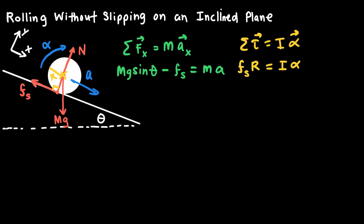I now have an equation for translational motion and one for rotational motion. I need one more equation to eliminate alpha. The linear acceleration A is related to the angular acceleration through the radius: A equals R times alpha, so alpha equals A divided by R. Substituting that into the torque equation gives: Fs times R equals I times A over R.